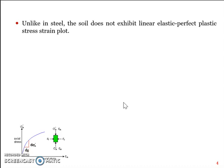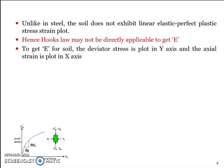Now the stress-strain plot of soil being a complex one, you can see in the graph there are different ways in which E can be assumed from the graph. Hooke's law may not be directly applicable to get Young's modulus of soil. For obtaining or estimating Young's modulus of soil, the deviator stress is plot in y-axis, which we call the axial stress, and the axial strain is plot in the x-axis.